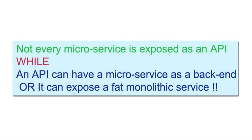The second thing that brings a clear difference between the two is that not every microservice is exposed as an API, while an API can have a microservice as a backend, or it can expose a fat monolithic service. So this is a clear difference — microservices are not directly exposed in a modernized architecture; rather they are exposed via APIs. An API is not essentially exposing a microservice; it can still expose a monolithic service as well, and it can have any type of source from where it picks up data and makes it available to the outside world.